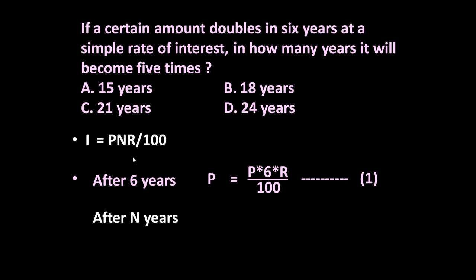When his amount becomes 5 times, P is the principal amount and remaining 4P is the interest. Because every year interest is increasing, but principal remains the same. So 4P is equal to P into N into R upon 100.